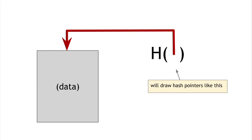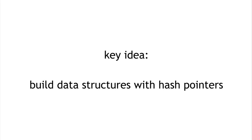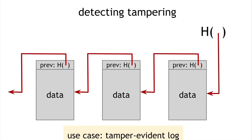We can take hash pointers and use them to build all kinds of data structures. The key idea: take any data structure — a linked list, a binary search tree — and implement it with hash pointers instead of regular pointers. For example, here's a linked list built with hash pointers — a data structure we're going to call a blockchain. Just like a regular linked list where each block has data and a pointer to the previous block, here the previous block pointer is replaced with a hash pointer. A use case for this is a tamper-evident log: we can add data to the end, and if somebody later messes with earlier data, we'll detect it.